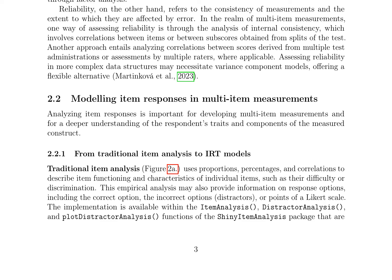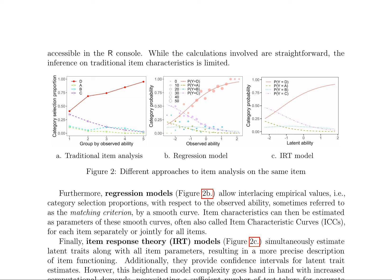Item response analysis is crucial for developing multi-item measurements and understanding respondent traits. Traditional item analysis uses proportions, percentages, and correlations to describe item functioning, but its inference is limited. Regression models allow for the estimation of item characteristics by interlacing empirical values with respect to the observed ability. Item response theory (IRT) models provide a more precise description of item functioning by simultaneously estimating latent traits and item parameters, but at the cost of increased computational demands.